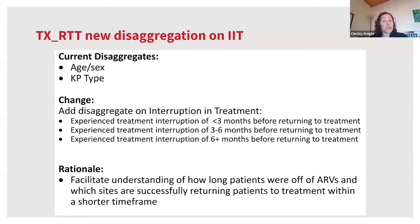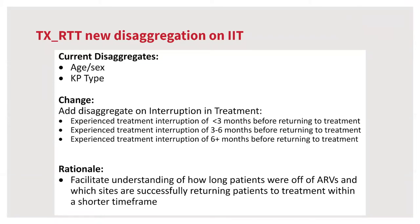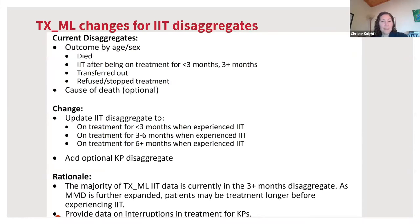For TX-RTT (return to treatment), disaggregates are added for interruption in treatment to reflect how long patients were off ARVs and which sites are successful at returning patients to treatment within shorter time frames. The interruption-in-treatment disaggregates are set for less than three months, three to six months, and six-plus months. Similarly for TX-ML, disaggregate changes are related to IIT (interruption in treatment). As the majority of TX-ML IIT data is currently reported as three-plus months, and with the expansion of MMD, this trend may increase, so the indicator is further split into three-to-six months and six-plus months.